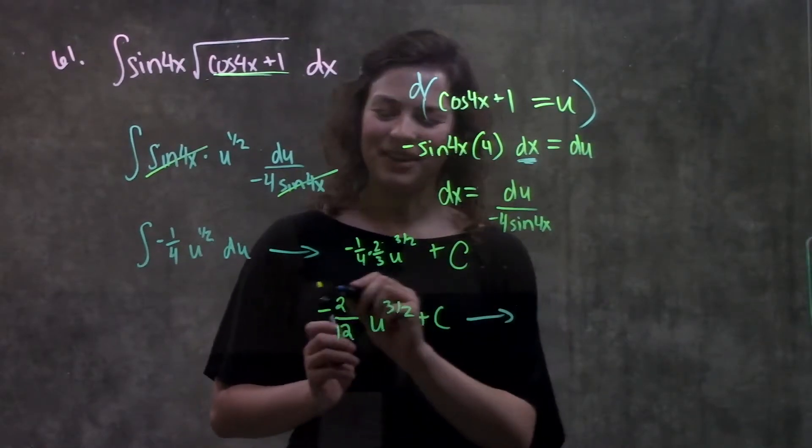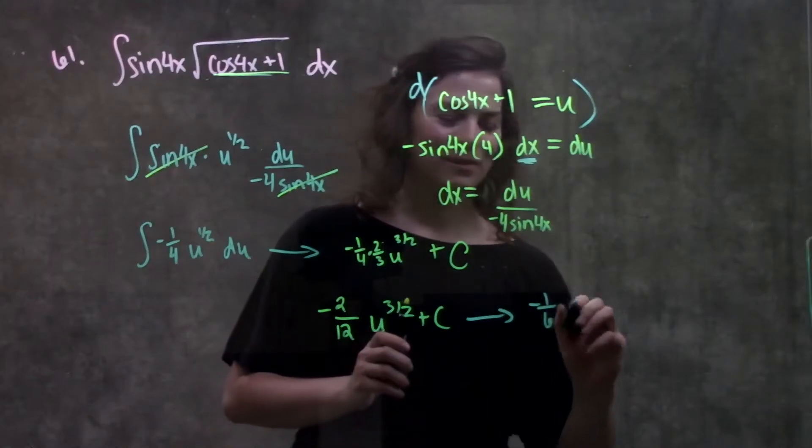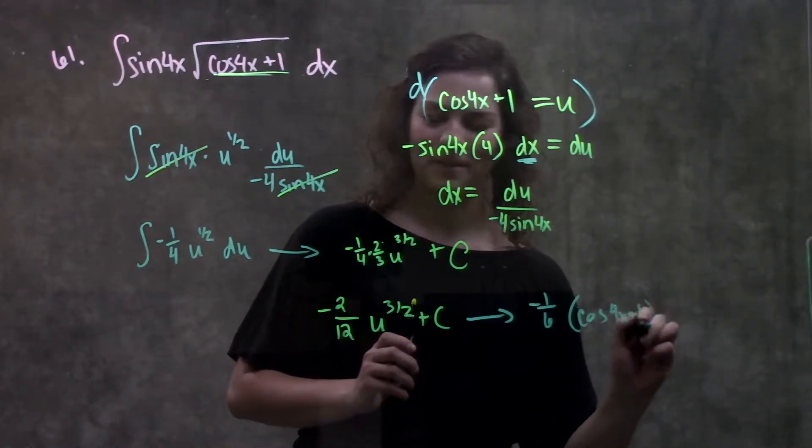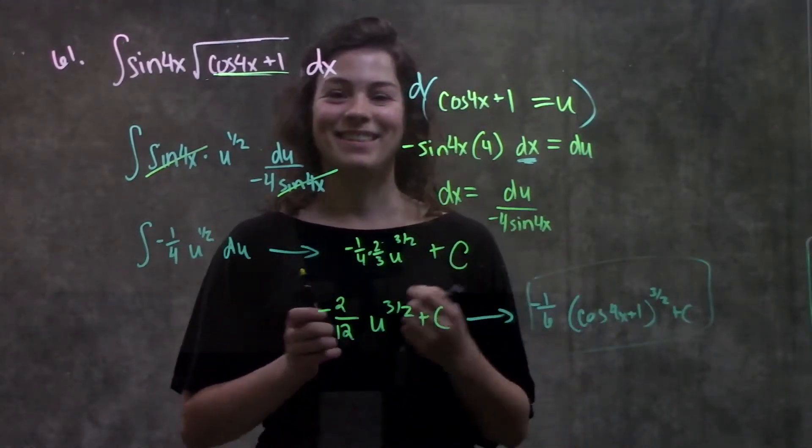So this becomes, I'm going to simplify this fraction, negative 1 over 6. Plugging in my u, I have cosine of 4x plus 1 to the 3 halves plus c. And that's my final answer.